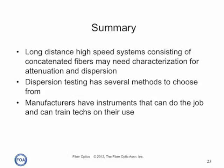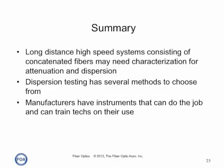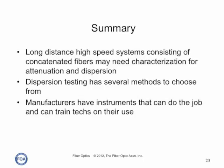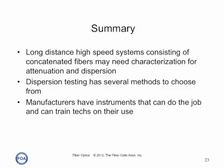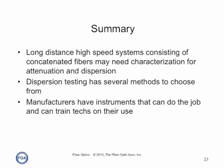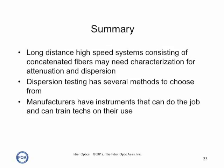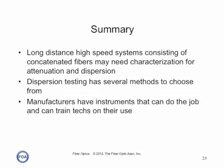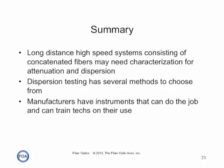In summary, long distance, high speed systems consisting of concatenated fibers may need characterization for spectral attenuation and dispersion — both chromatic dispersion and polarization mode dispersion. The dispersion testing has several different methods to choose from, but manufacturers have instruments that can do the job and they can train techs on their use. As with all complex instruments, like OTDRs, the proper use of the instrument requires training.